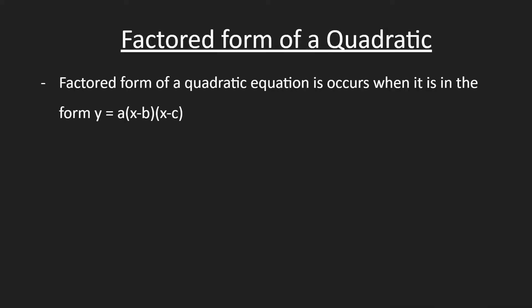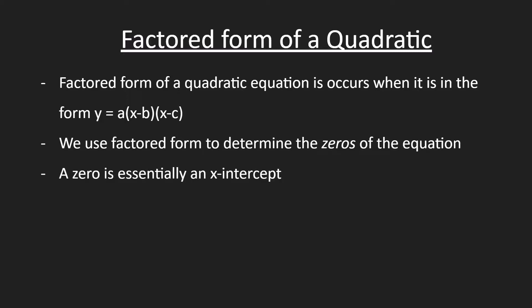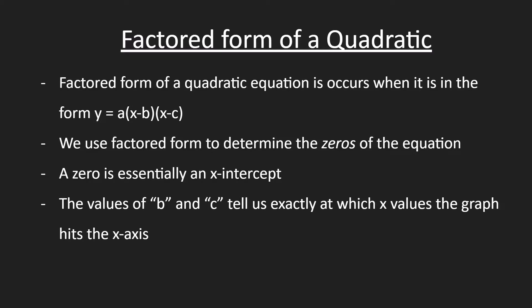Now, we can talk about the factored form of a quadratic. The factored form of a quadratic equation occurs when it is in the form y equals a times x minus b times x minus c. This has been factored, and we can use factored form to determine the zeros of the equation. Another word for a zero is an x-intercept, so basically when the graph touches the x-axis. The values of b and c tell us at exactly which x values the graph hits the x-axis.